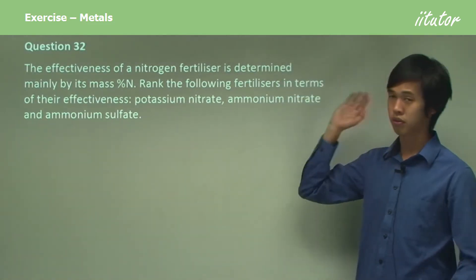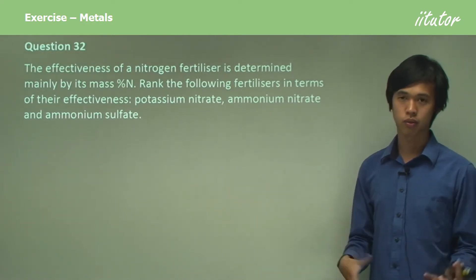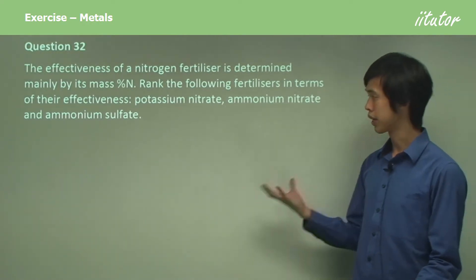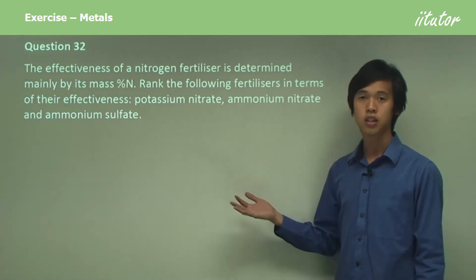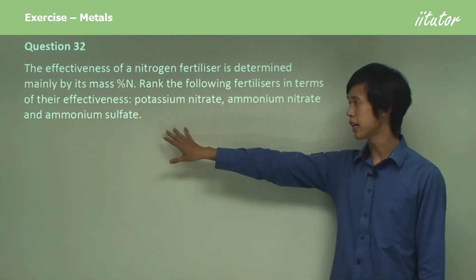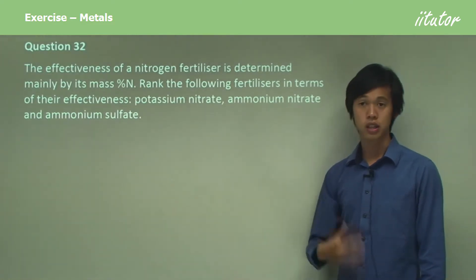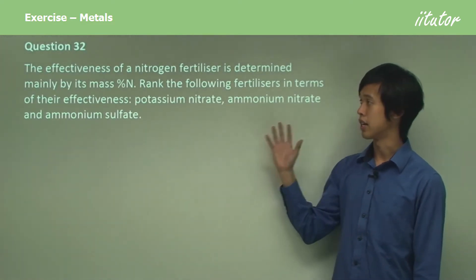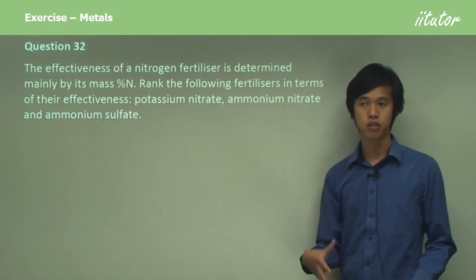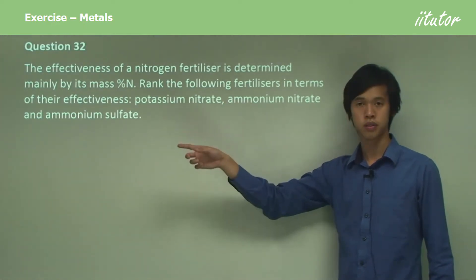So you might be thinking, well how do I do this? We've never done anything quite like this. Don't panic — that's the key in chemistry, don't panic. All you have to do is just think about what it's actually asking you: just find the percentage mass of nitrogen in these different chemicals.